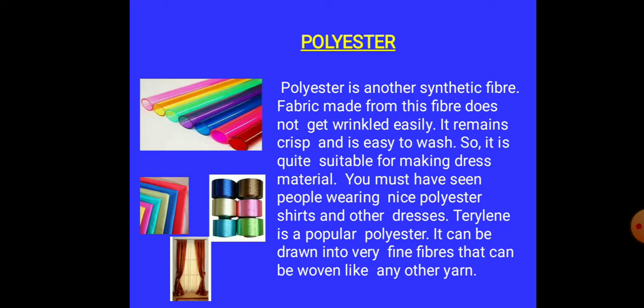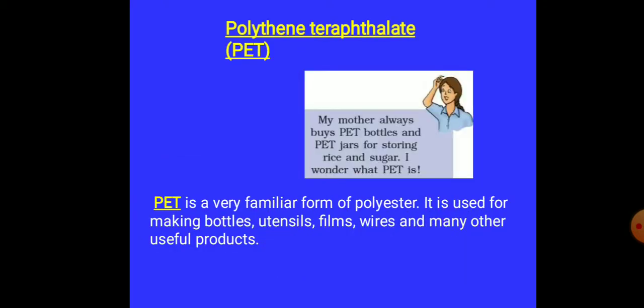Here are other substitutes also: Terricot and Terrylene. They are substitutes of polyester. Here polythene terephthalate, PET, is a very familiar form of polyester. It is used for making bottles, utensils, films, vials, and many other useful products.